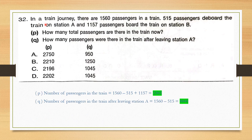Question number 32. In a train journey, there are 1560 passengers. 515 passengers deboard at station A and 1157 passengers board at station B. Total passengers now: 1560 minus 515 plus 1157 equals 2202. Statement Q: how many passengers were there after leaving station A? Initially 1560, minus 515 who deboarded, gives 1045. The correct answer is option D.